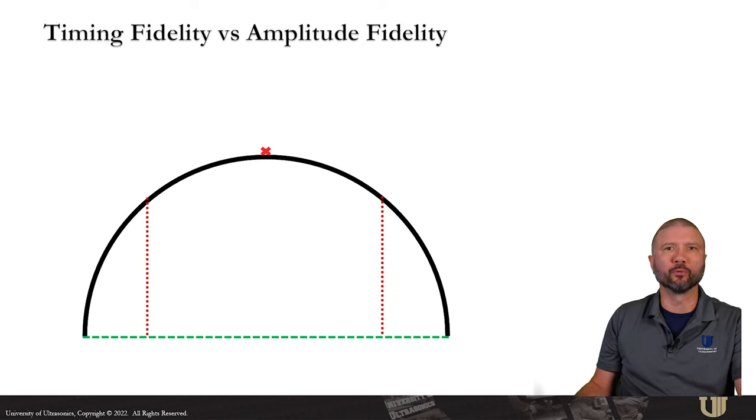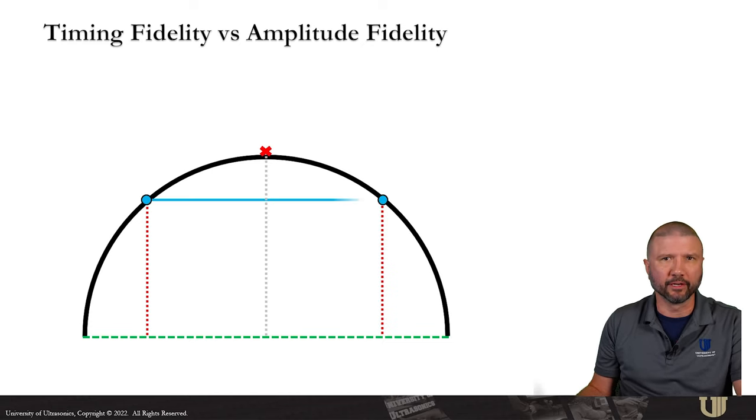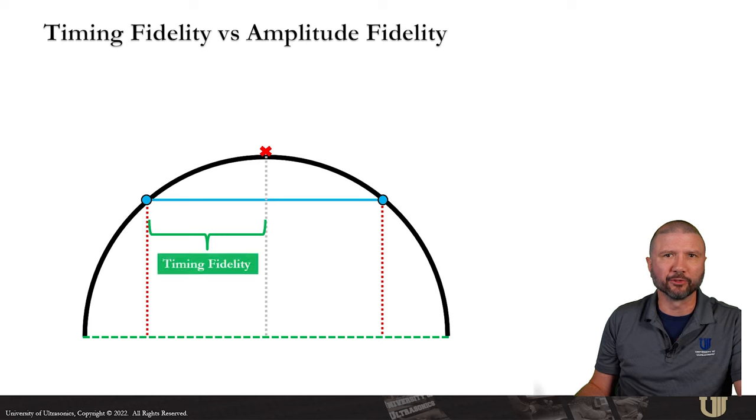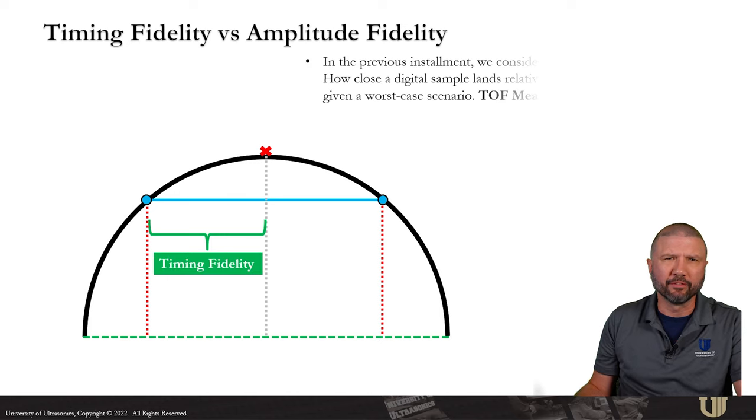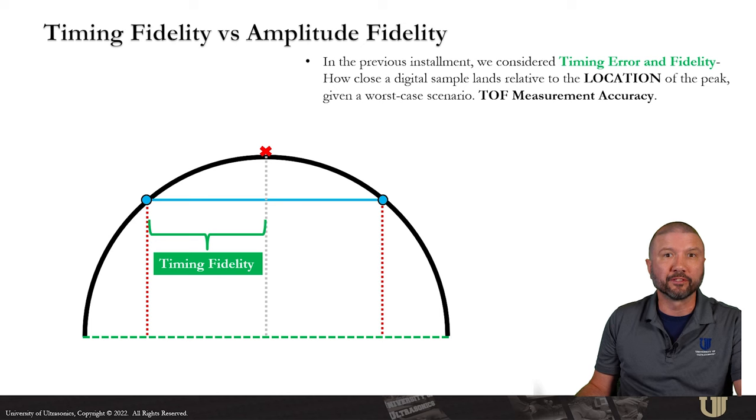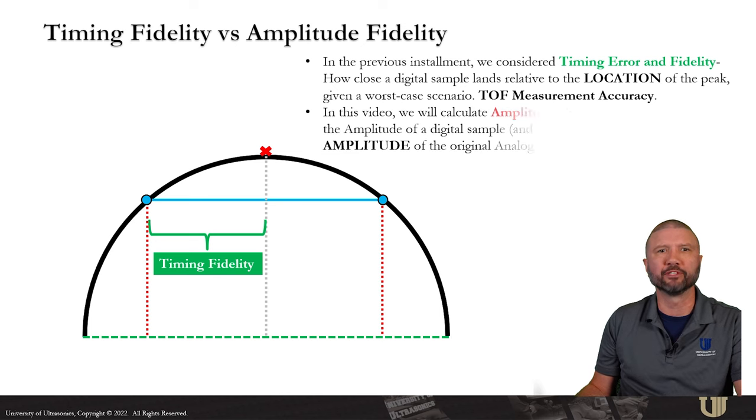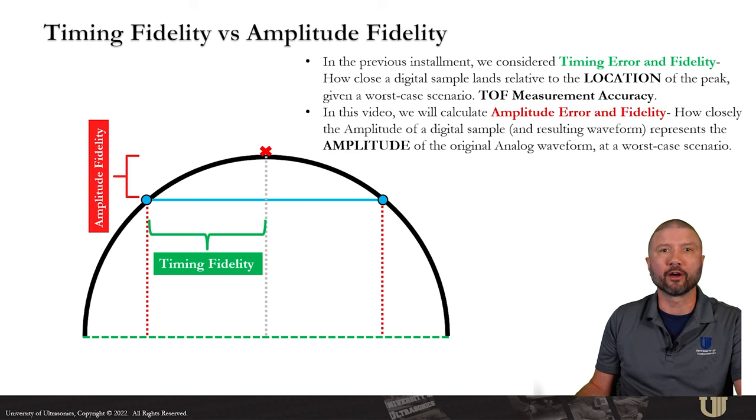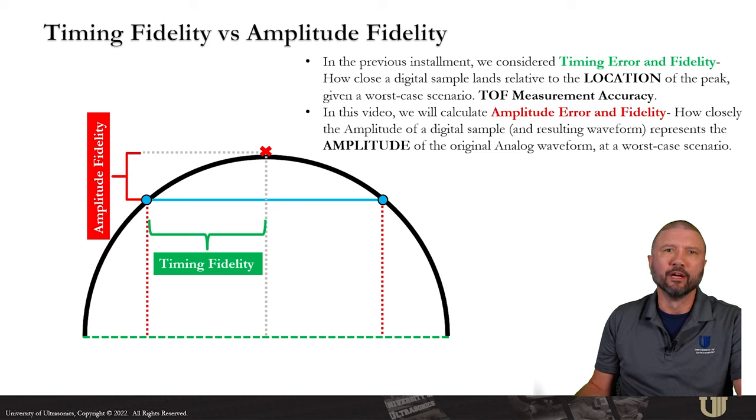In the previous installment, we considered timing error and fidelity, which is how close a digital sample lands relative to the location of the peak, given a worst case scenario. This is all about time of flight measurement accuracy. In this video, we'll calculate amplitude error and fidelity, which means how closely the amplitude of a digital sample in the resulting waveform represents amplitude of the original analog wave, given a worst case scenario.